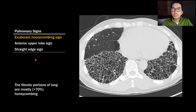The exuberant honeycombing sign is when most of the fibrosis is honeycombing rather than reticulation or traction bronchiectasis. Usually when you see this sign, the amount of fibrosis is quite extensive as well — for example, the honeycombing takes up most or all of the lower lobes.